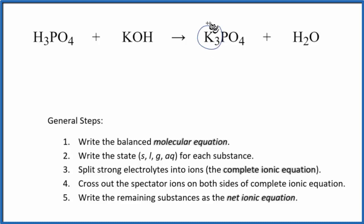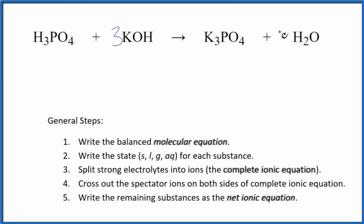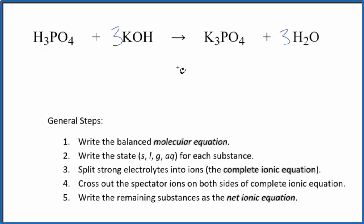You can see I have three potassiums here and only one here, so I'm going to put a three right here. Now I can see I have three hydrogens — three times one is three — so I have six hydrogens here. I'm going to put a three out here; that balances the hydrogens. I have one phosphate, one phosphate — that's good. And the oxygens are balanced. So this is the balanced molecular equation.